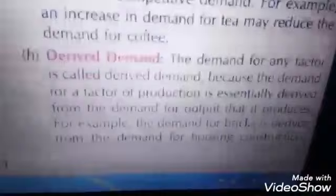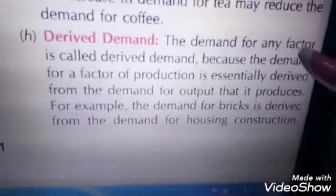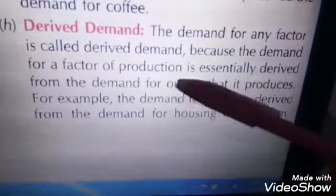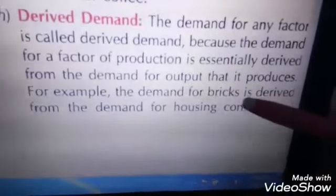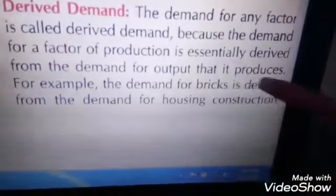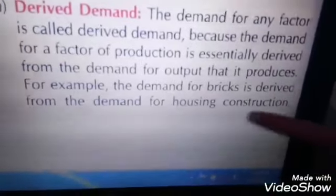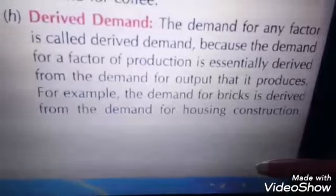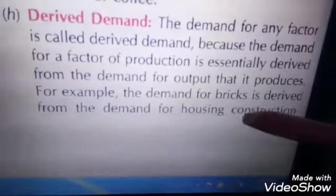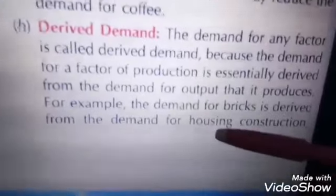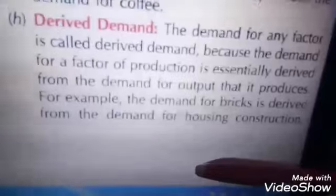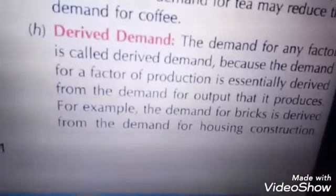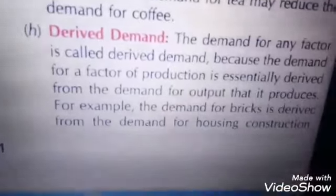Then comes derived demand. The demand for any factor is called derived demand, because the demand for a factor of production is essentially derived from the demand for the output that it produces. For example, the demand for bricks is derived from the demand for housing construction. To build a house, we need bricks and cement. Another example: to build a house, you need labourers. A house cannot be made without labourers. That is called derived demand.